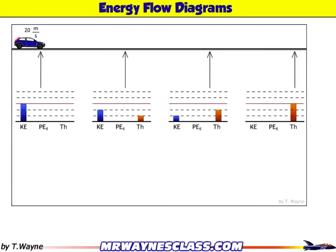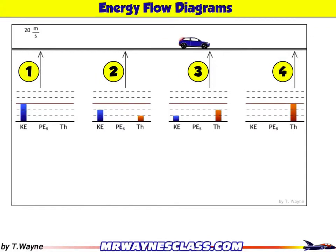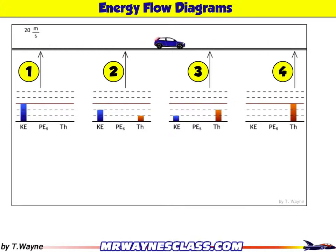Let's look at where the energy goes — an energy flow diagram for a car moving along a horizontal stretch of road. The car starts off at 20 meters per second at position 1, and then passes through positions 2 and 3, coming to rest at position 4.